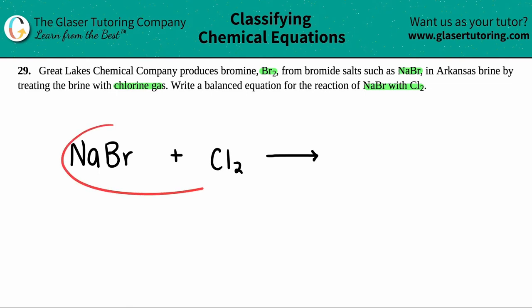Now, what type of reaction is this? Well, I see that I have a compound reacting with a lonely, one element molecule. This is a single replacement. So this is a single replacement reaction in which one ion of the compound is going to want to react with the element of the molecule, in this case chlorine.